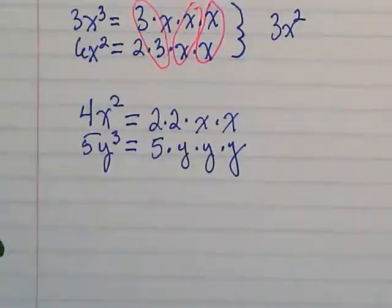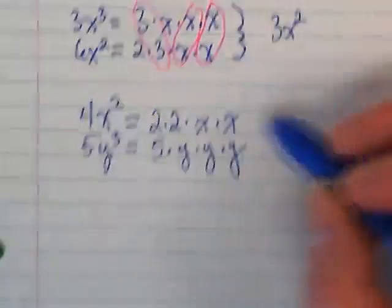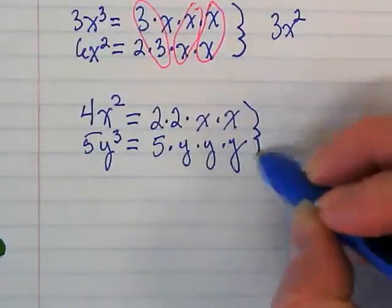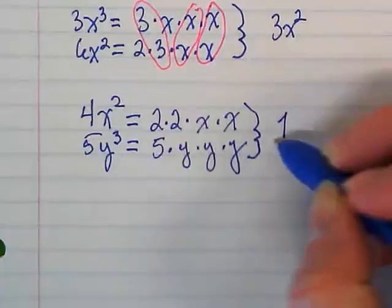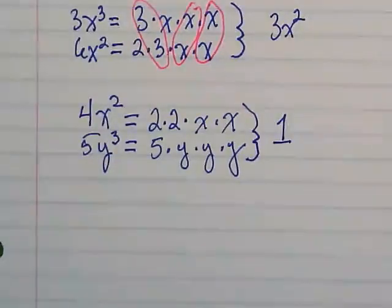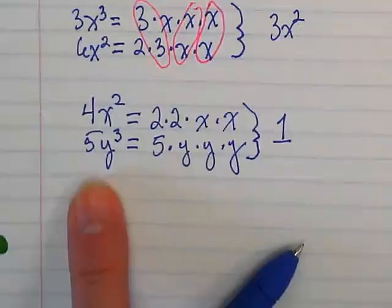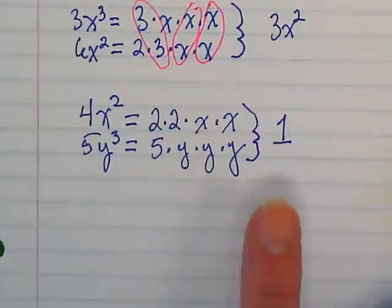What do they have in common? Nothing. Yeah, they don't really have anything in common except the number 1. We leave the 1 out because 1 is a factor of everything, but if you're circling nothing, it's going to be 1. So the GCF of 4x squared and 5y to the third is 1.